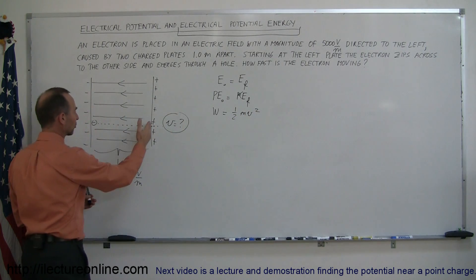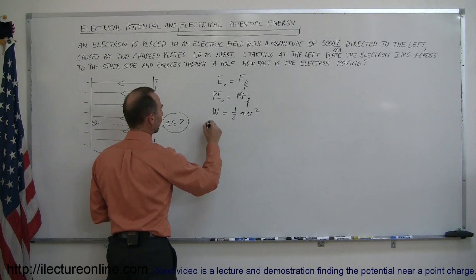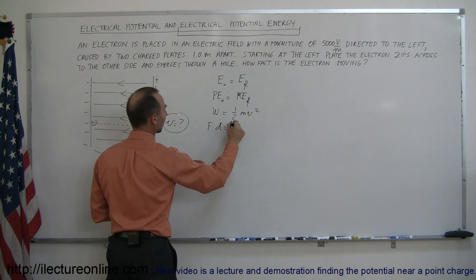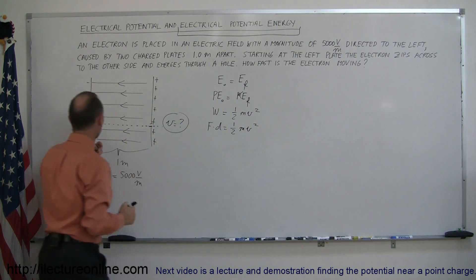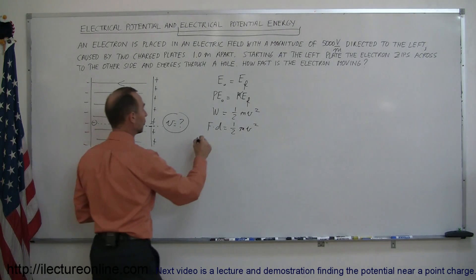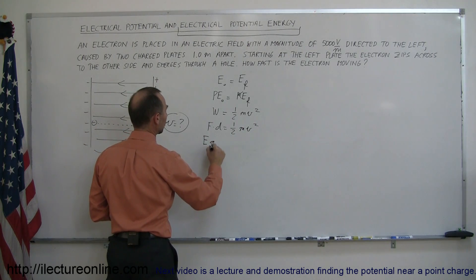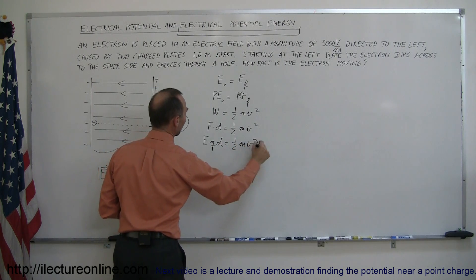Of course how much work does it take to push an electron across an electric field like that? The work done would be equal to force times distance and the force that an electron experiences in an electric field is equal to E times q so this is E times q times d equals one-half mv squared.